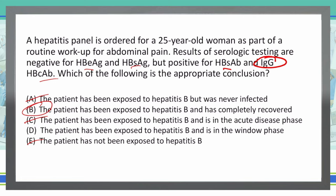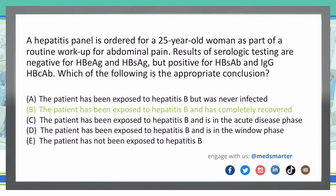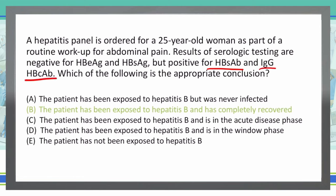B is the final answer. The patient has been exposed to Hep B and has completely recovered, indicated by the Hep B surface antibody and the IgG core antibody. They don't have the surface antigen, which would indicate a carrier state, but she does have the surface antibody, meaning she's been exposed and recovered. The recovery is confirmed by the IgG core antibody.